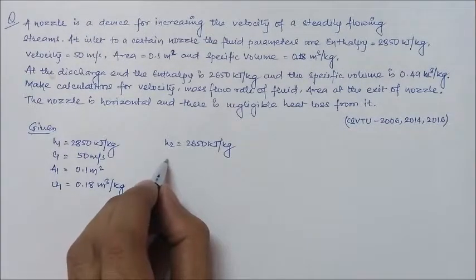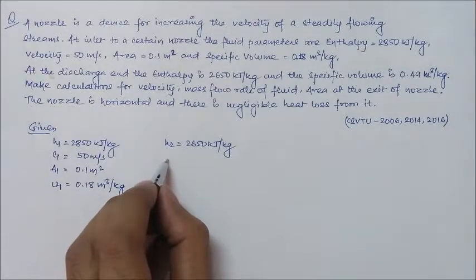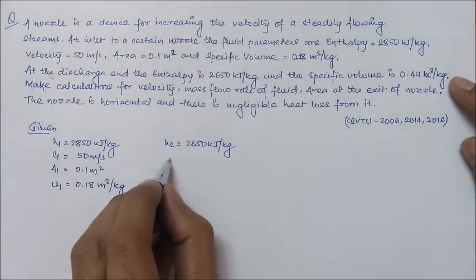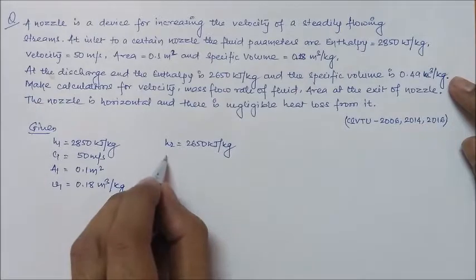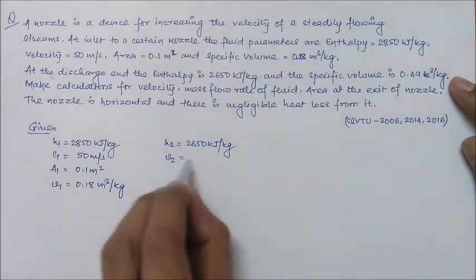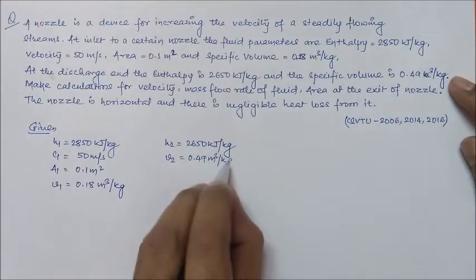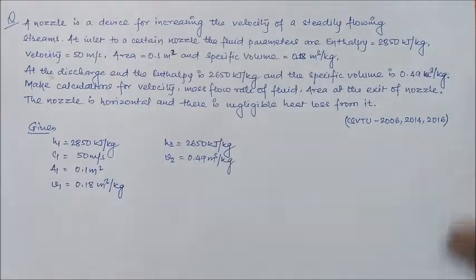We don't know the velocity at the outlet. We have to calculate it. The only given thing at the outlet is specific volume which is 0.49 meter cube per kg.